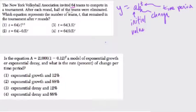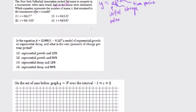There are 64 teams to compete in a tournament. After each round, half the teams were eliminated. Which equation represents the number of teams after r rounds? So our time period is rounds here.